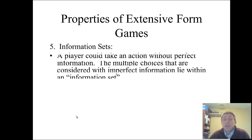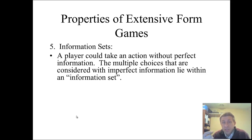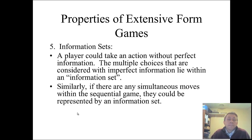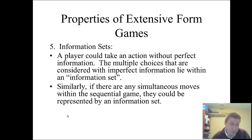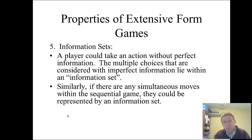Information sets: if a player takes action without perfect information, those choices lie within an information set, represented by circling more than one decision node. This is also a way to represent a simultaneous move within a sequential game, or to represent a simultaneous game using extensive form. For example, if player A moves first — going right or left — and player B doesn't know what A chose, you circle the two decision nodes to show that player B does not have that information.